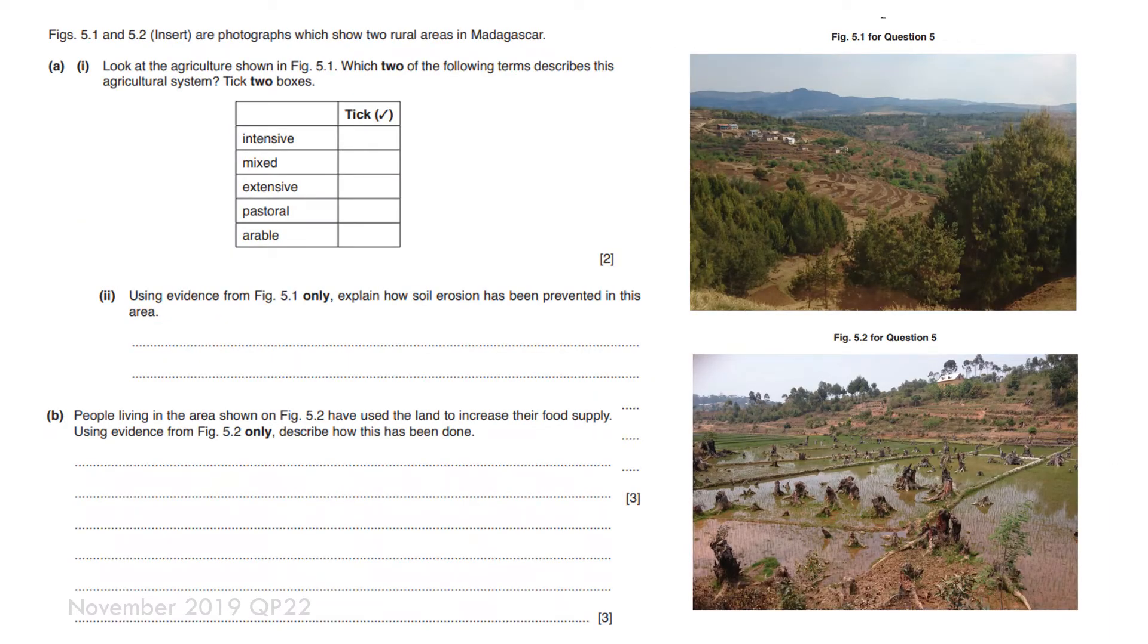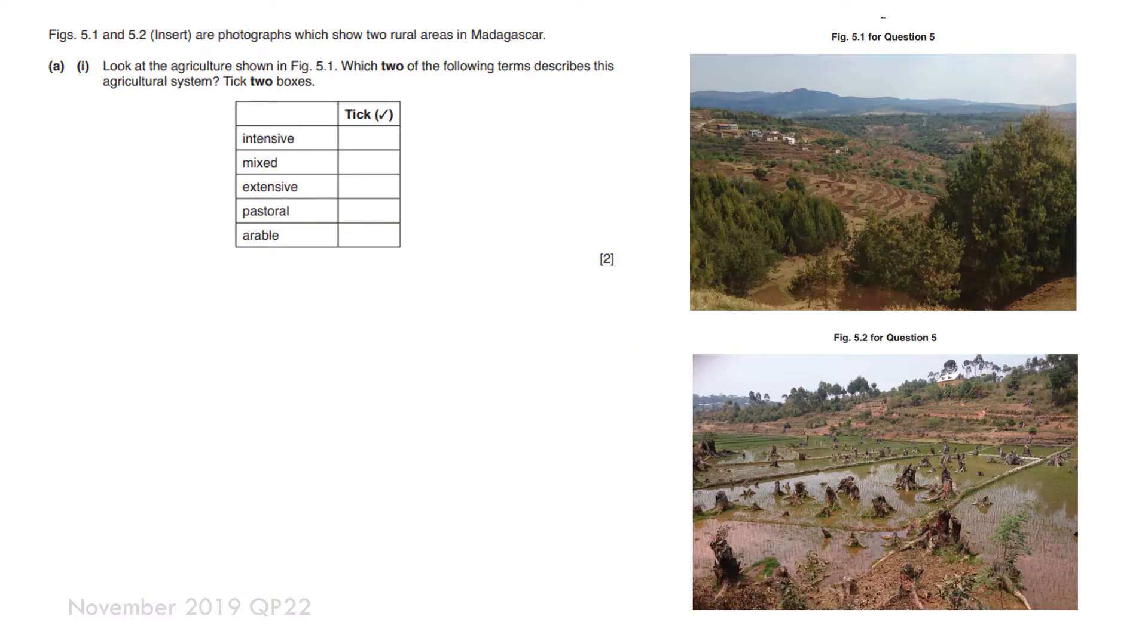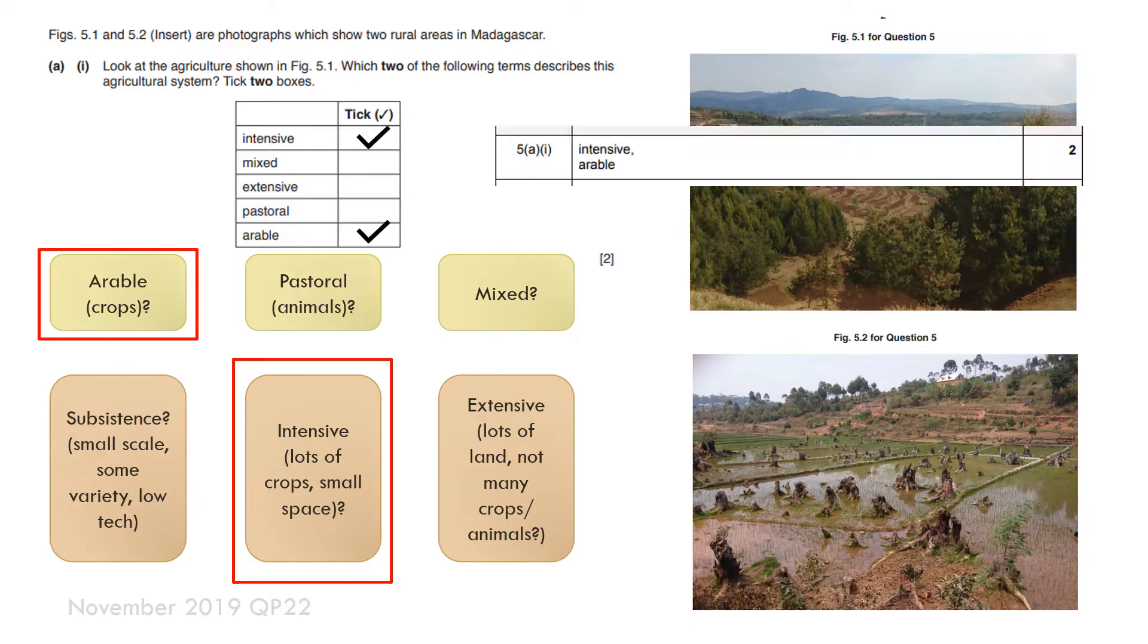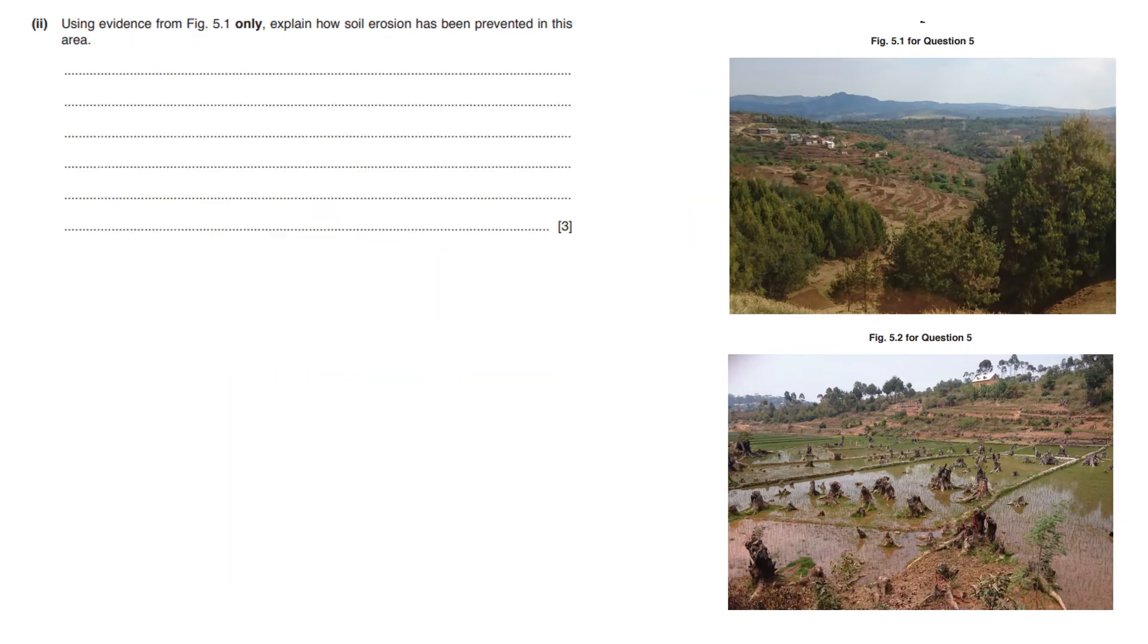Here's another example. Again for two marks I need to identify the types of farming shown. If I take the first bits, is it arable, pastoral or mixed? It's definitely arable. And is it subsistence, intensive or extensive? Well for me it's still intensive because there's lots of crops growing on a very small space. And here we go, there are the marks available.